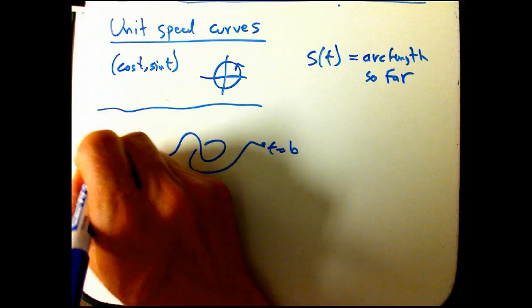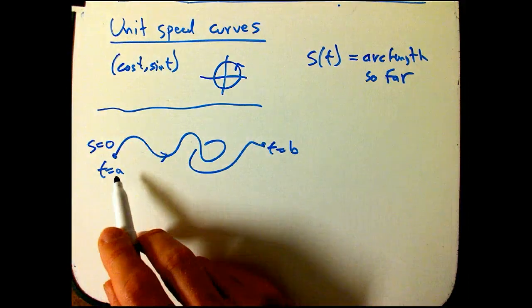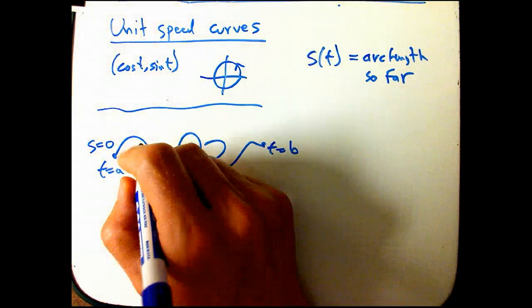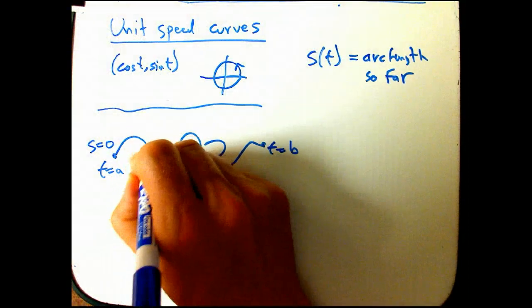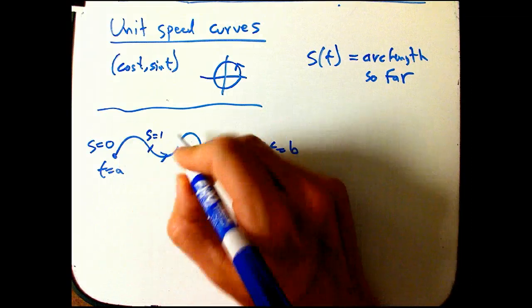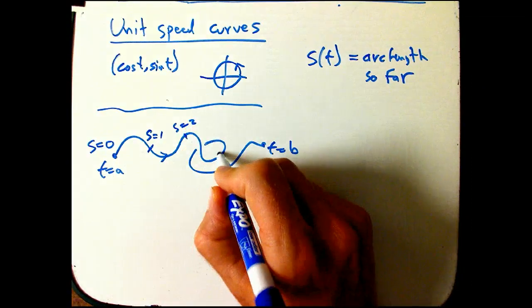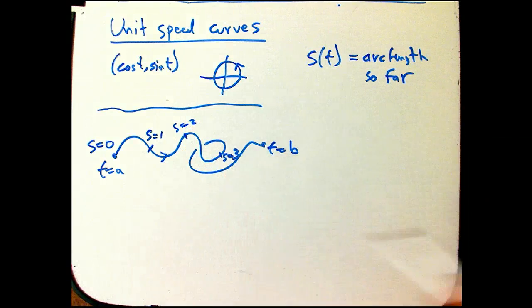So it's a function of t, and I'm going to put the s values here. So s equals 0 is at the start of the curve. Then maybe here is s equals 1, and equal length to get to s equals 2, and equal length maybe right here to get to s equals 3, etc.